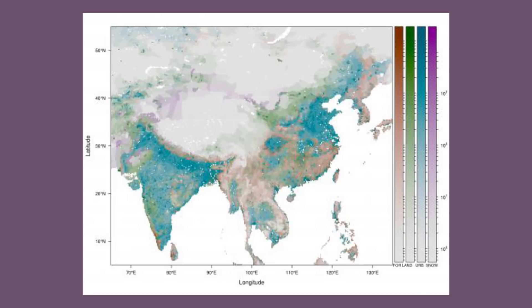The second advantage of R is its visualization and graphing capability. GGplot2 is one of the most versatile and powerful graphing packages available anywhere. Look at this graph of land use in southern and central Asia — this is amazing.